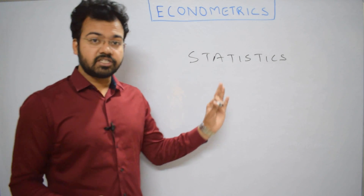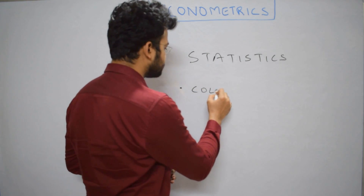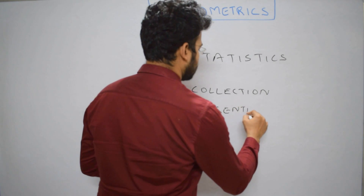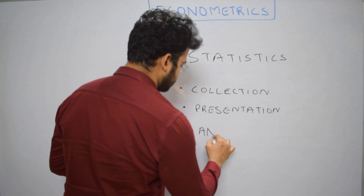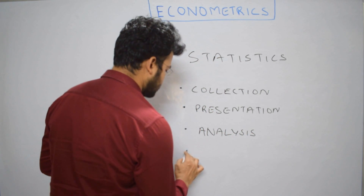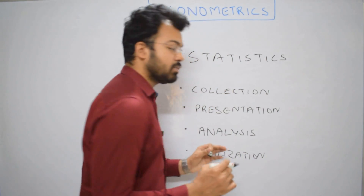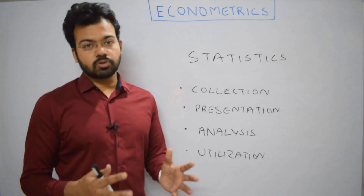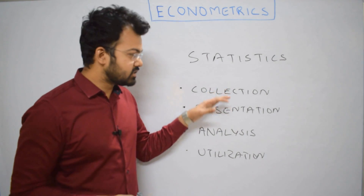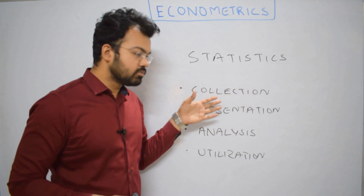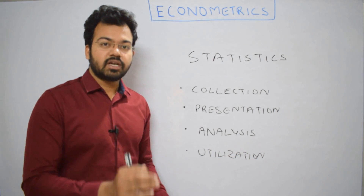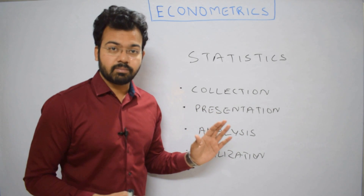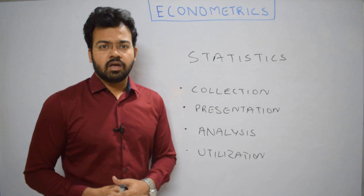Statistics — what's the meaning of this word? The nature of statistics: it is a process of collection, presentation, analysis, and utilization of numerical data to make inferences about uncertainty in the future, related to the subjects of economics, business, and other social and physical sciences. First you collect the body of data, then you present it in a table, then you analyze it, and finally you utilize the data in order to make certain inferences, because there is uncertainty in the future.